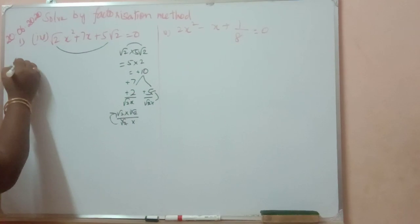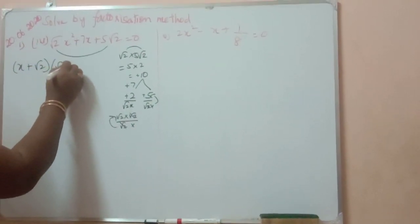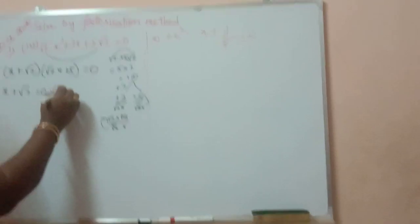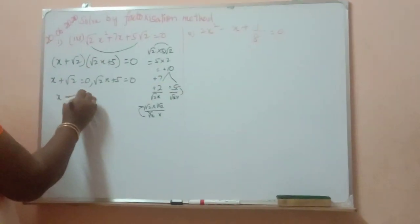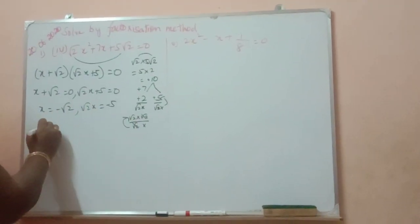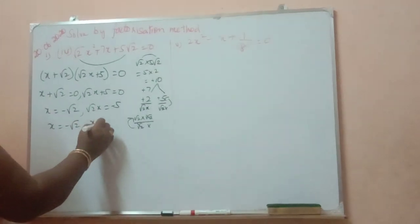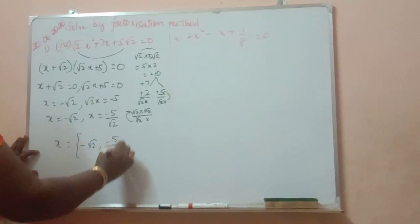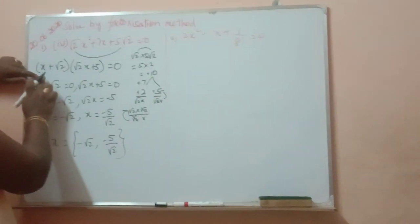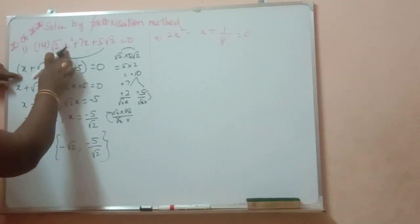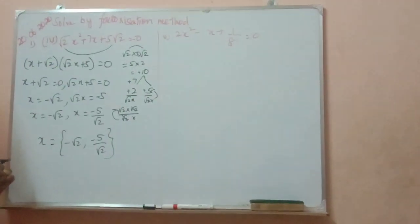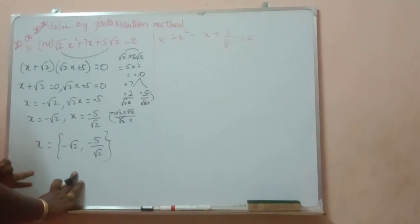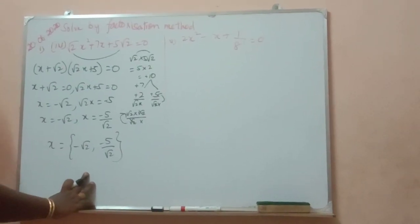Root 2 x plus 5. That's all. So, x plus root 2, root 2 x plus 5 is equal to 0. Either first bracket is equal to 0 or second bracket is equal to 0. So, x equal to minus root 2. Root 2 x is equal to minus 5. x equal to minus root 2, x equal to minus 5 by root 2.